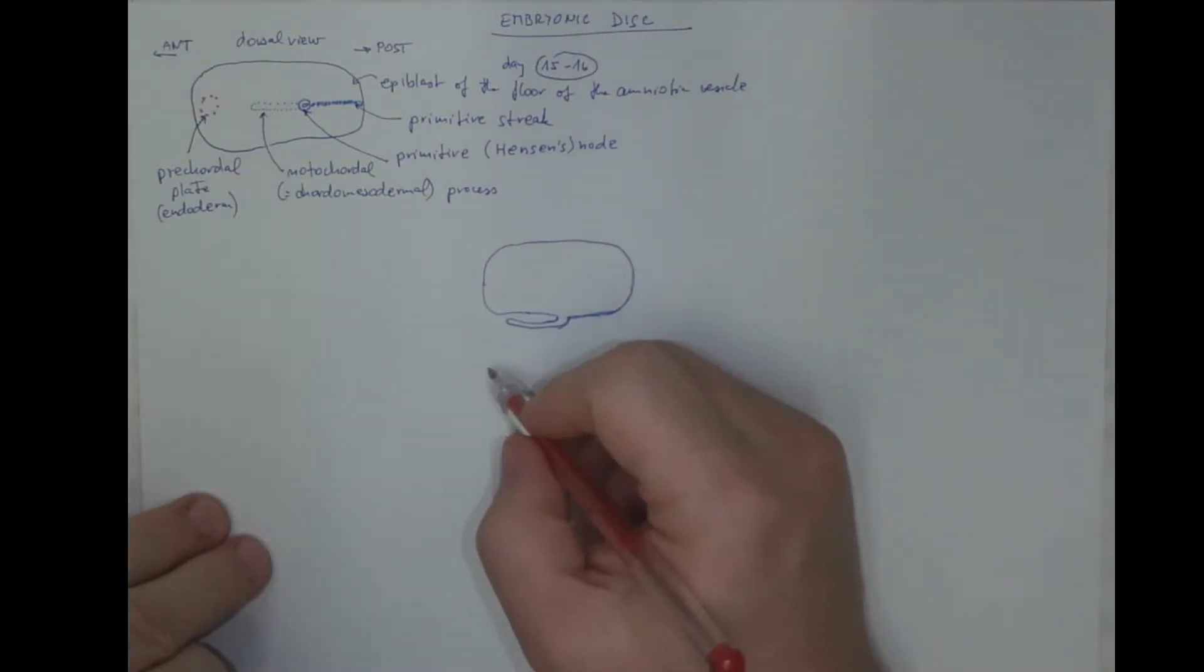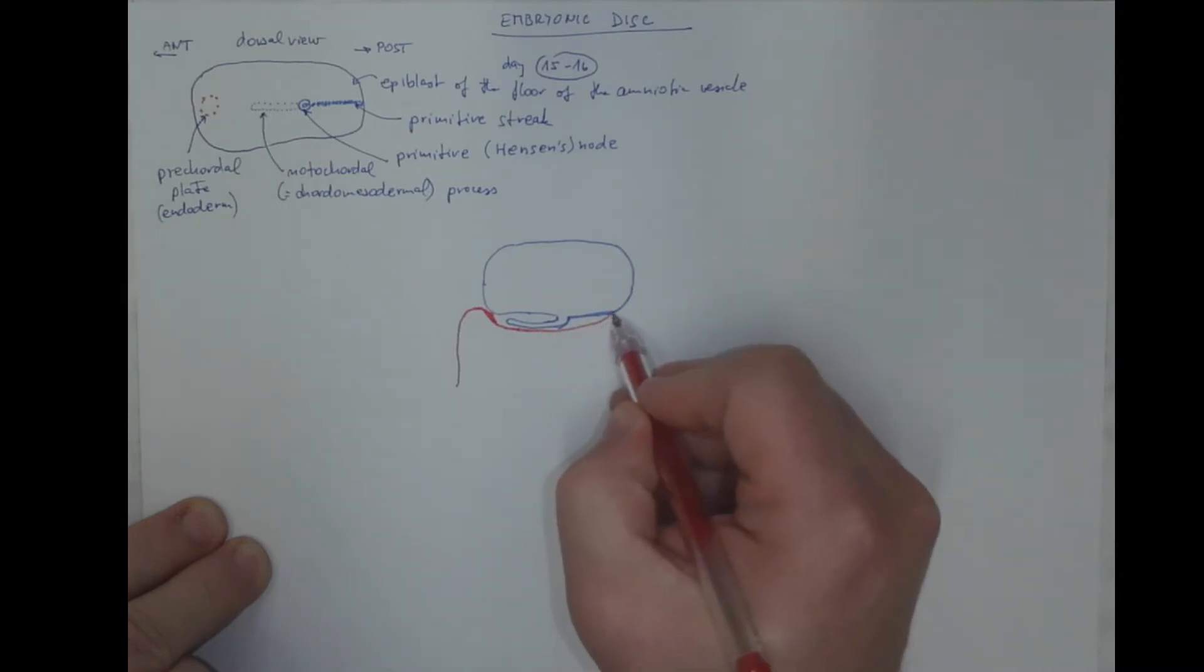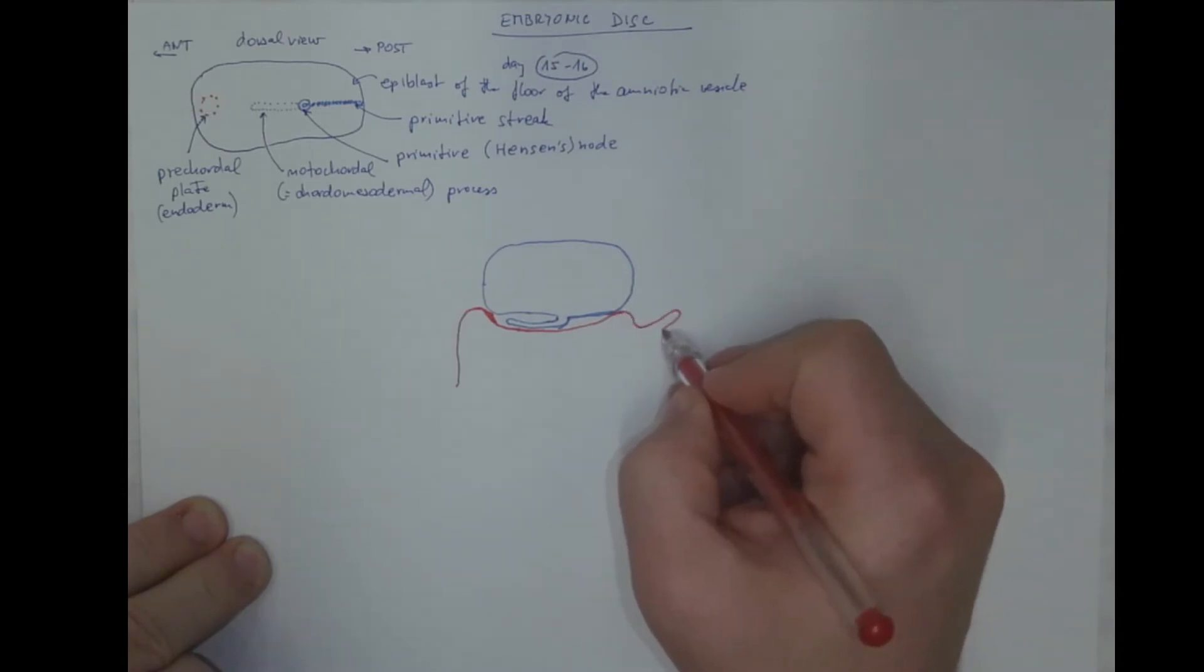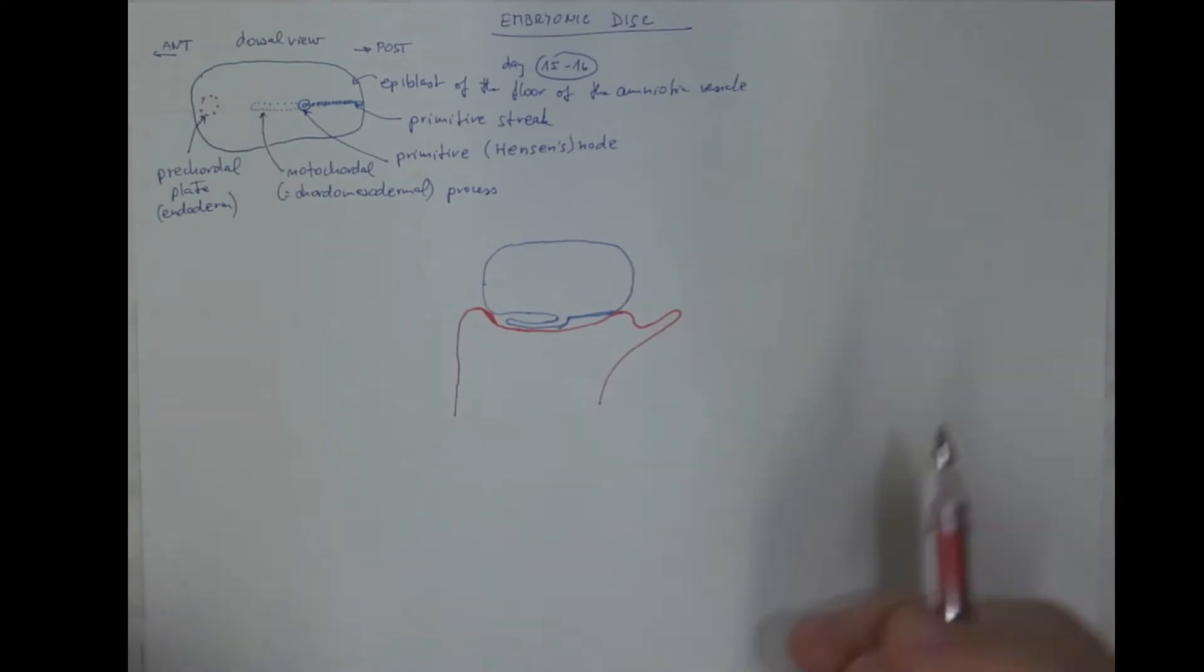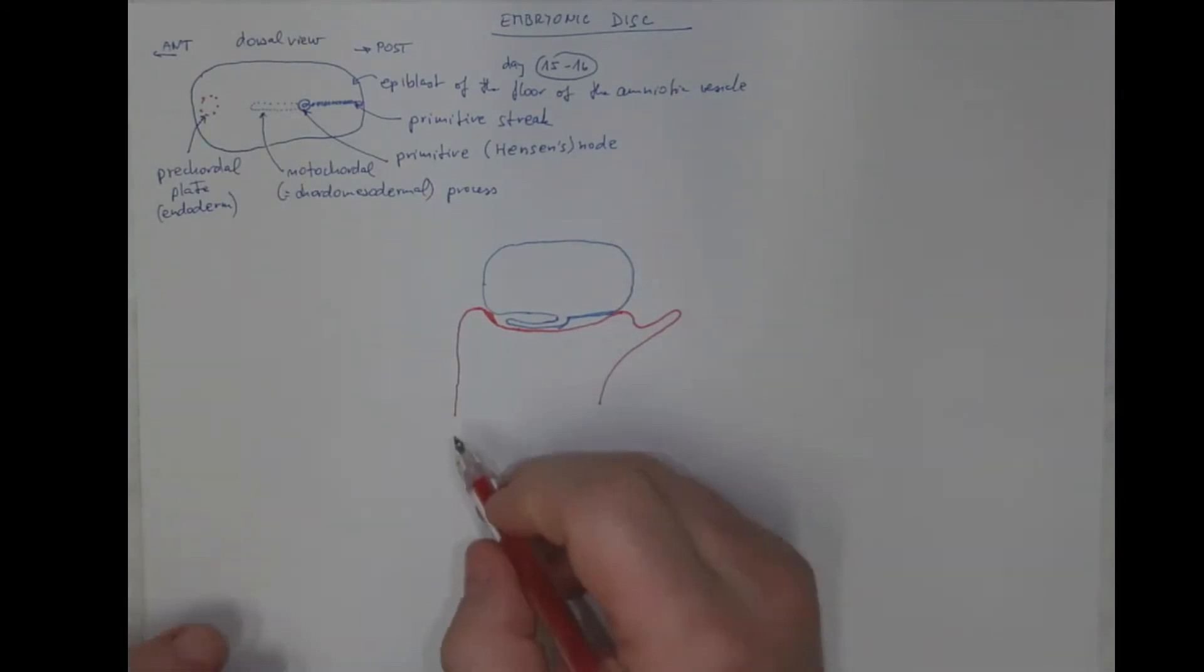And in the sagittal section, we would see also the yolk sac that comes in close touch with the amniotic vesicle here. That's where it becomes also thicker. That's the precordial plate here. And also in the caudal region, it comes in touch with the ectoderm. Here it would be the allantois, the finger-like projection. It's actually one of the fetal membranes in oviparous vertebrates, but it's rudimentary in mammals, therefore in humans as well.